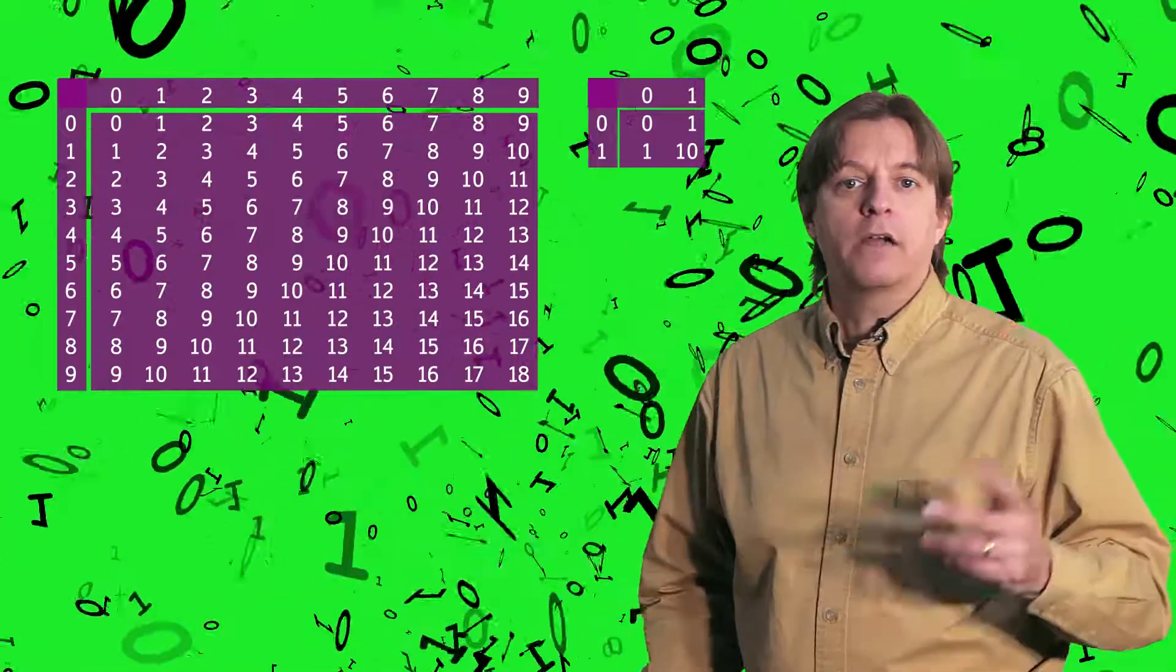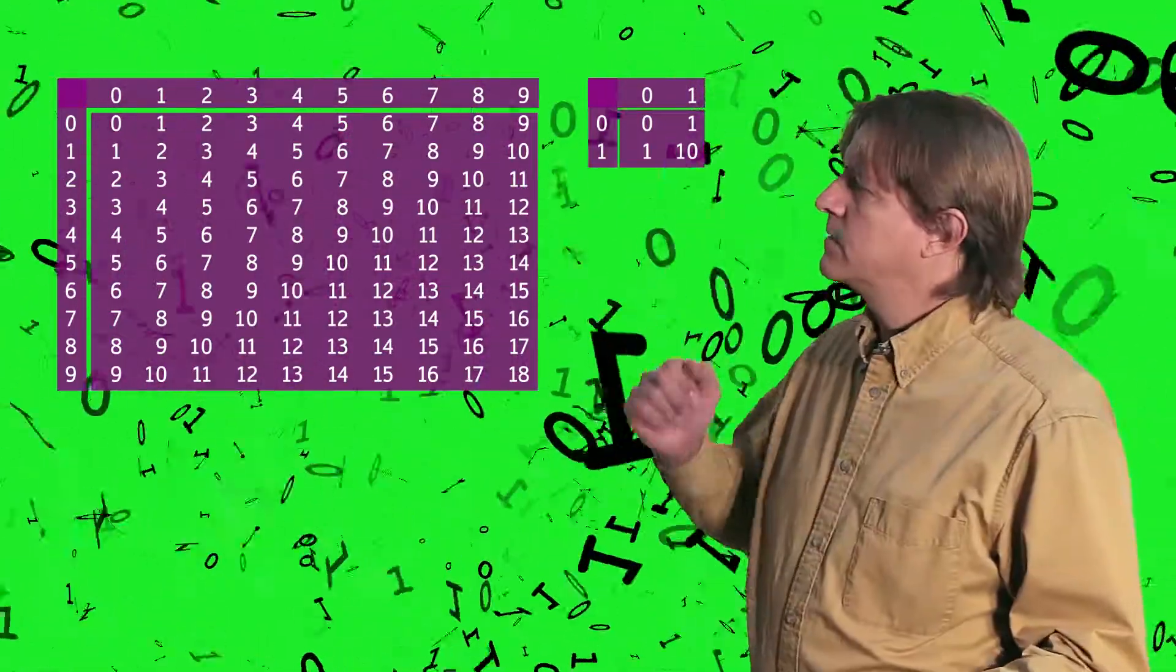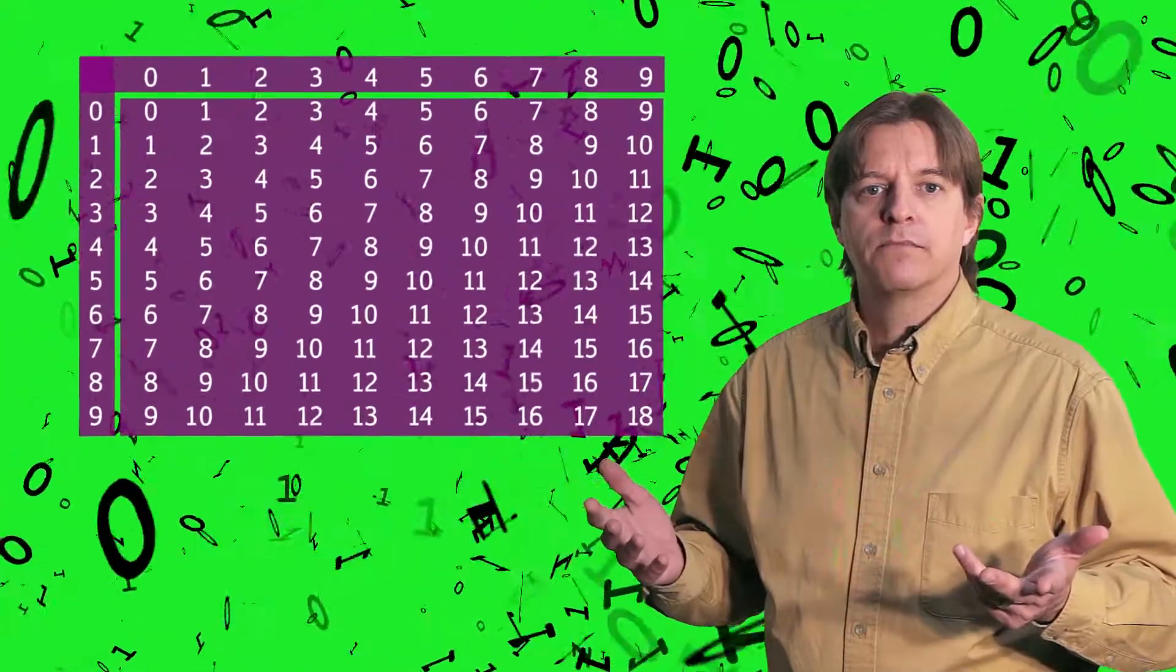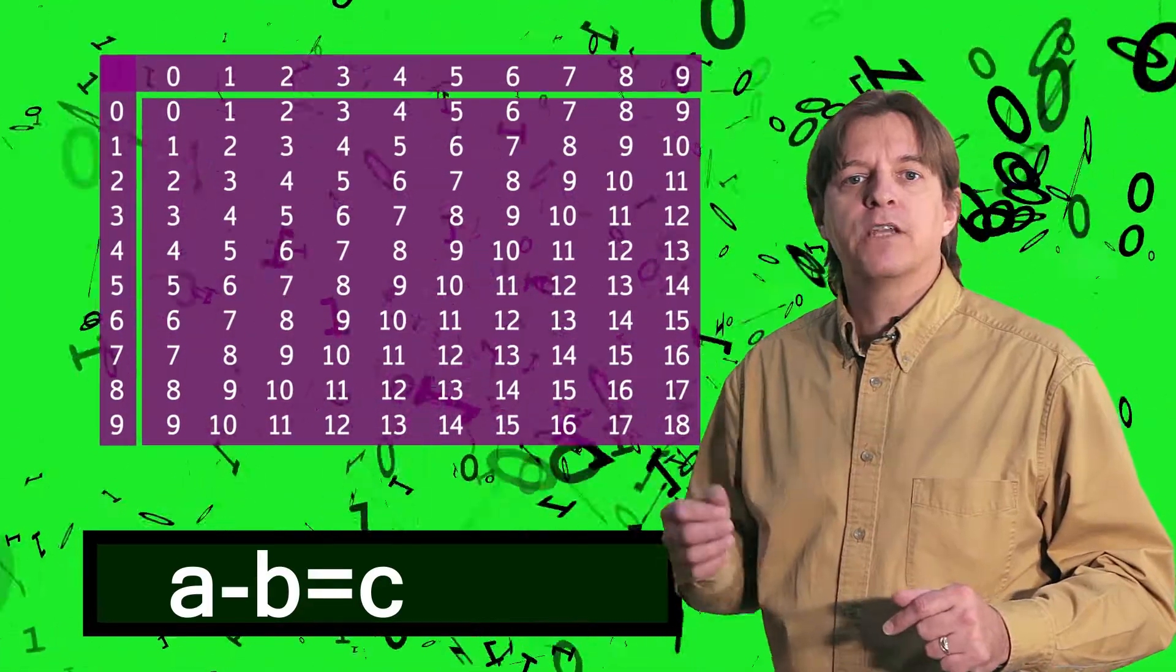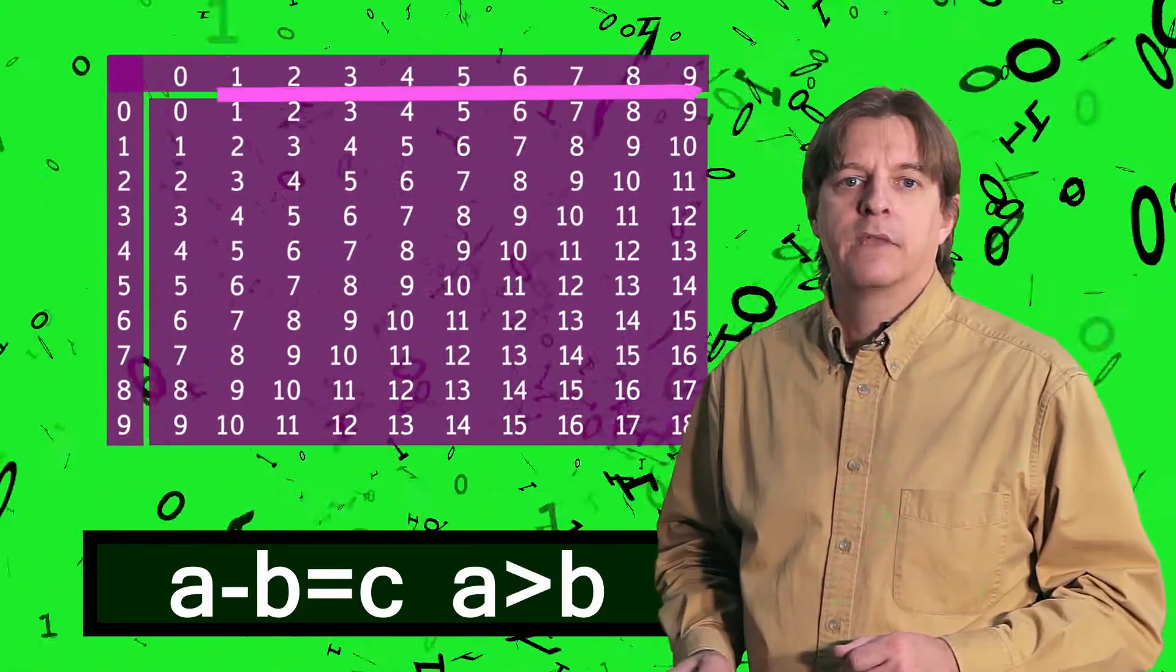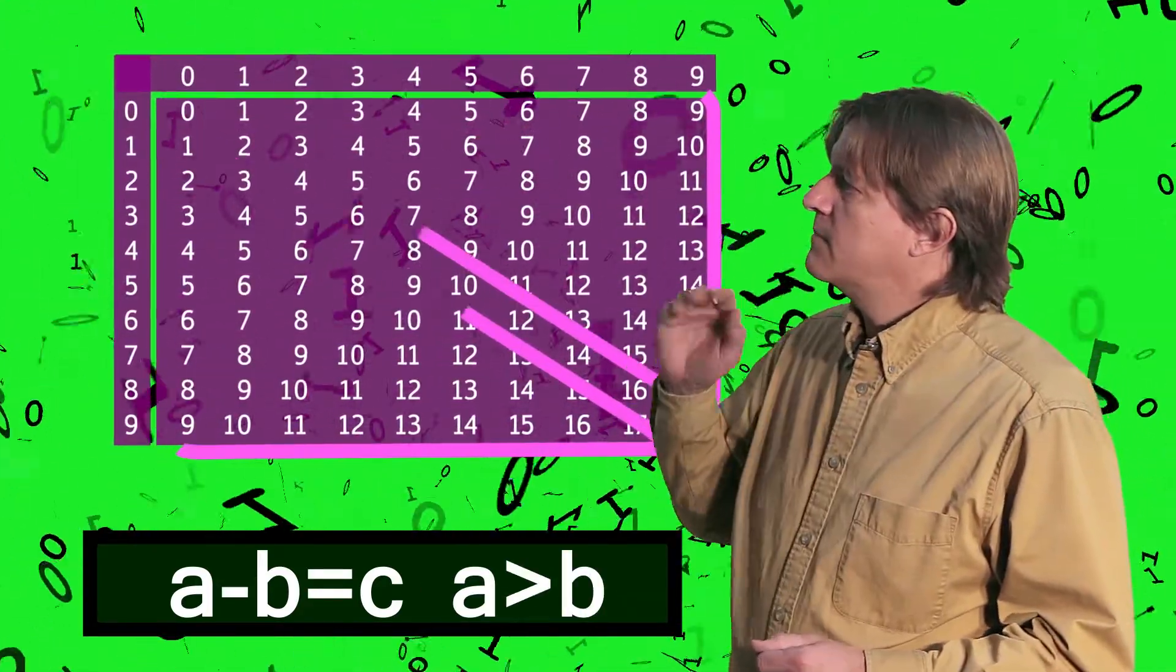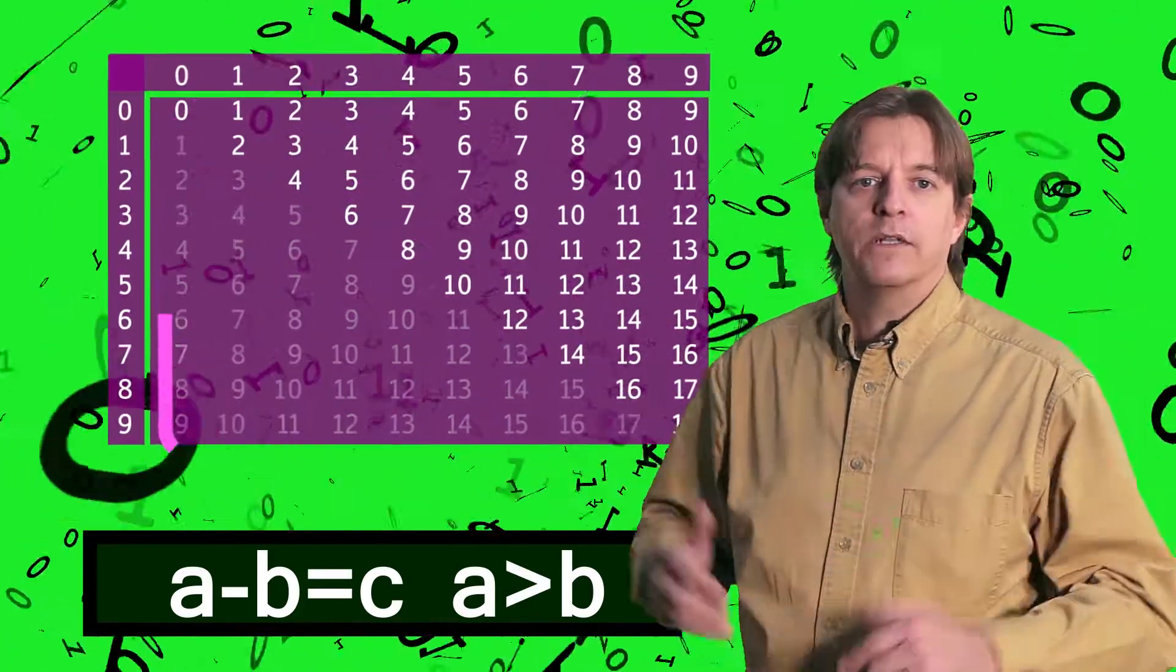Remember last time when we talked about addition? We looked at these two tables. Let's remember how we use this with decimal numbers. We'll ignore negative numbers for now, so we'll establish the rule that the first number has to be larger than the second. Since this half of the table is the same as this half, we'll just ignore one side.